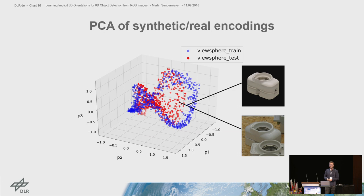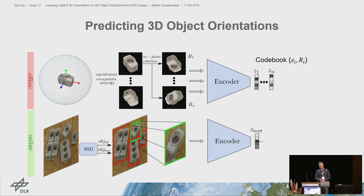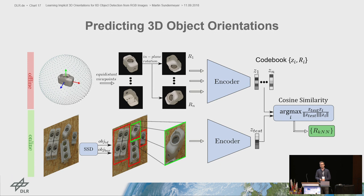To predict 3D object orientations, we first create a large codebook of 92,000 encodings from object views sampled over all of SO3. Online, we detect an object and feed the scene crop into our encoder to generate one test code. This test code is compared to all training codes using cosine similarity, and the nearest neighbor gives us the 3D orientation.